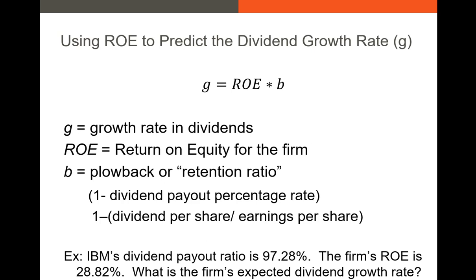For example, IBM's dividend payout ratio is 97.28% and the firm's ROE is 28.82%. The retention ratio is 1 minus 97.28%, so only about 2.72% of earnings per share are being plowed back into the firm. We multiply 28.82% by (1 minus 97.28%), giving an expected dividend growth rate of about 0.78%, or 78 basis points.